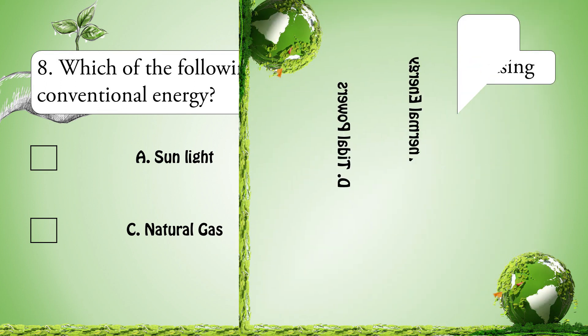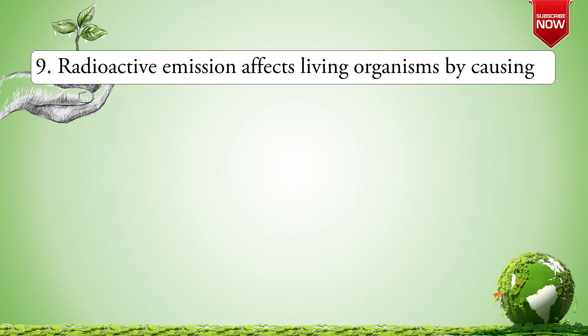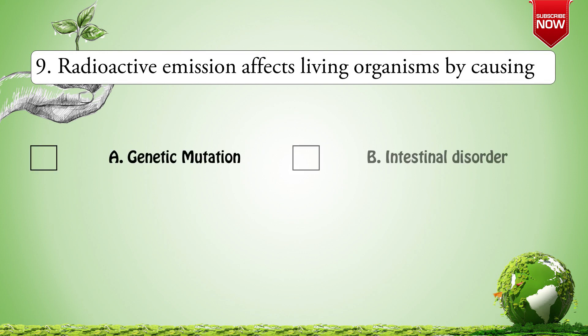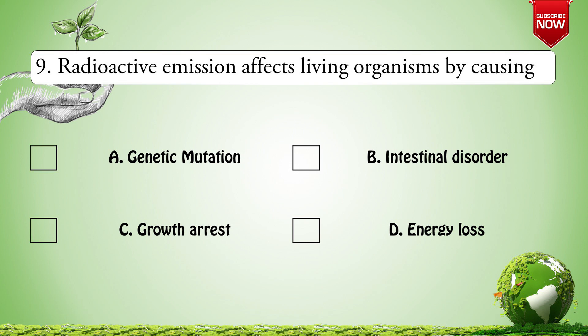Next question: Radioactive emission affects living organisms by causing — Options are: A. Genetic mutation; B. Intestinal disorder; C. Growth arrest; D. Energy loss. The correct option is A: Genetic mutation.